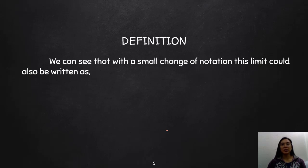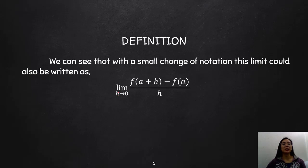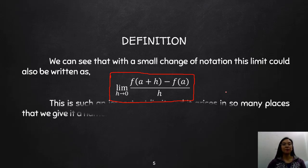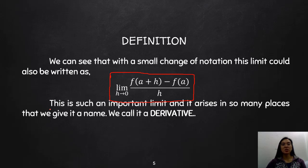We can actually rearrange that formula such that instead of x, we replace it with the variable h. So we have the limit of f(a+h) minus f(a), all over h, as h approaches 0. This formula is used to calculate the differential of a certain function. This is such an important limit, and it arises in so many places, that we give it a name — we call it a derivative.